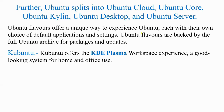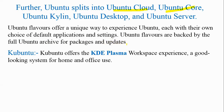Ubuntu further splits into Ubuntu Cloud, Ubuntu Core, Ubuntu Kylin, Ubuntu Desktop, and Ubuntu Server, among multiple parts. It is available in different kinds of technology. Each Ubuntu flavor offers a unique way to experience Ubuntu, with its own choice of default applications and settings, and all flavors are backed by the full Ubuntu archive for packages and updates.